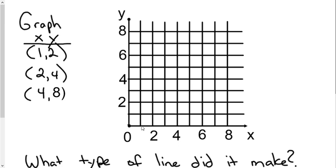So 1 to 2: we go over 1 on the x-axis and up to 2. Then 2 to 4: we go over to 2 on the x-axis and up 4 on the y-axis. And then 4, 8. Now we just connect our dots to make a line. I redid the points in blue so they could show up on that thicker red line — I want it to stand out against the grid.